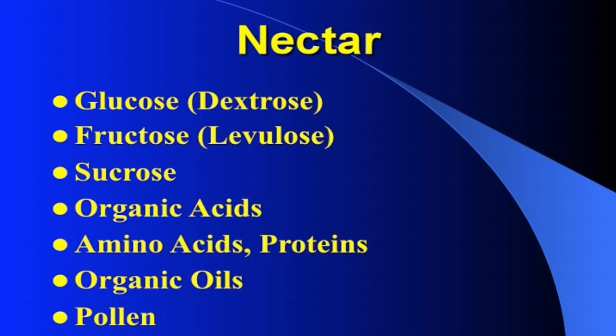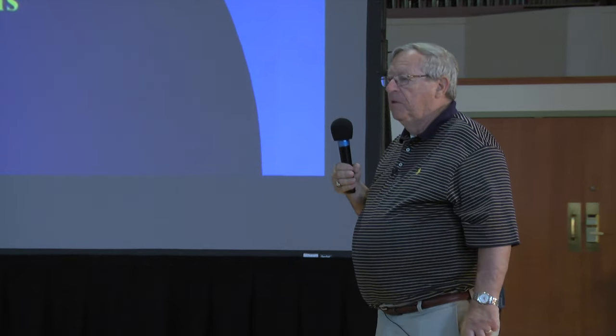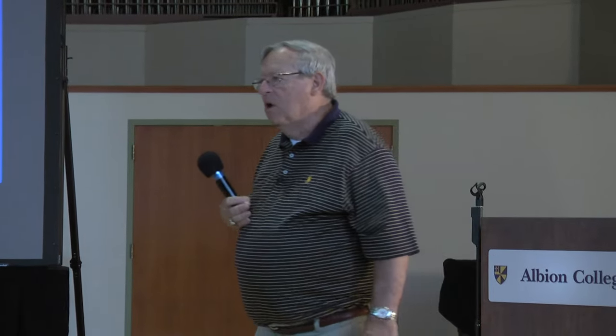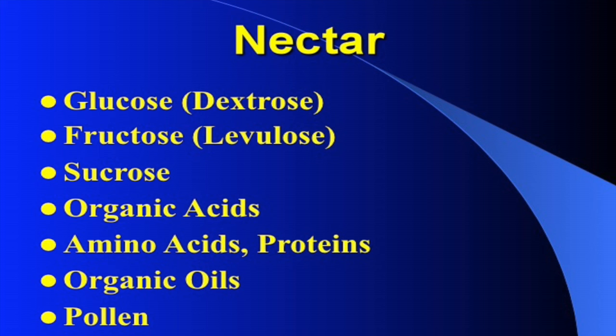Nectar is basically a solution of sugars with other components that give it its unique color, flavor, and aroma. It's made up primarily of three sugars: glucose, fructose, and sucrose, along with organic acids, amino acids, proteins, organic oils, and there's always pollen mixed in with it as well. But you need to basically think of nectar secretion as primarily a solution of sugars.